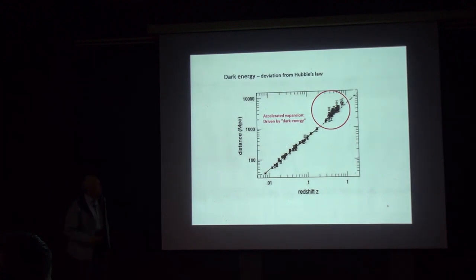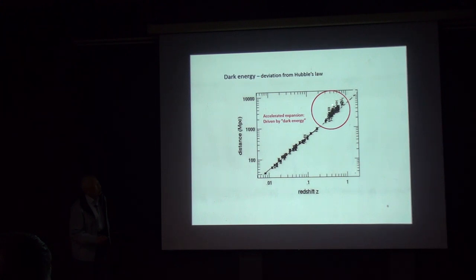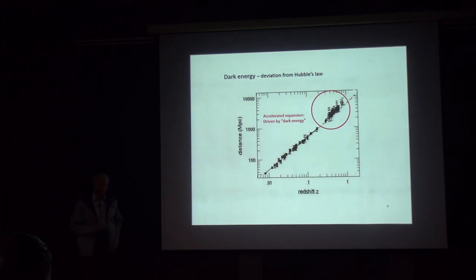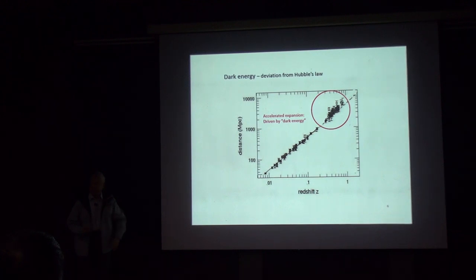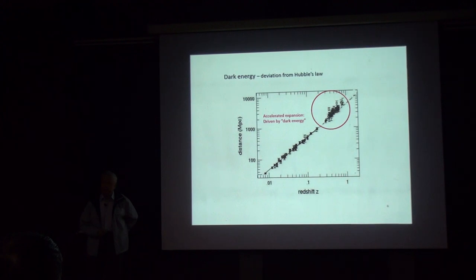These are the earlier observations for the closer galaxies. But recent observations of the farther-away galaxies show they deviate from this curve — a definite deviation. This shows that the farther galaxies are actually accelerating. That means the expansion of the universe does not proceed at a constant rate, but is accelerated. People say this must be due to some unknown energy, which they call dark energy.